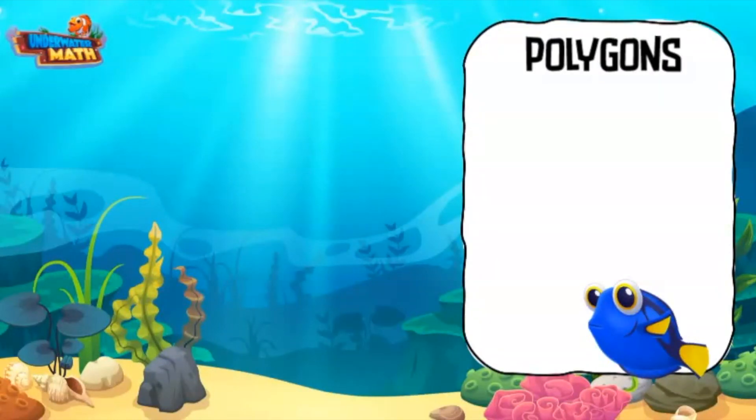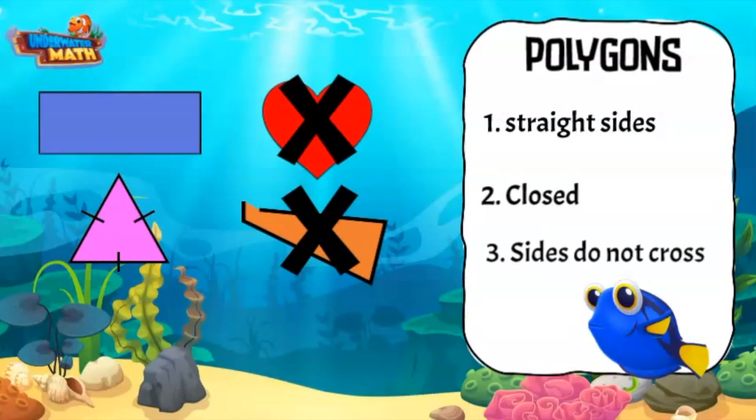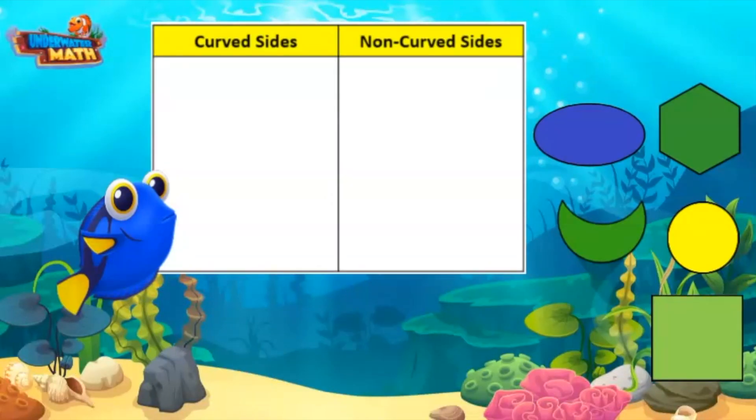Another important term is polygon. A polygon is a figure with straight sides, no openings, and the sides cannot cross paths. For a figure to be a polygon, it must meet all three rules. When categorizing two-dimensional shapes, we sort them by different attributes.